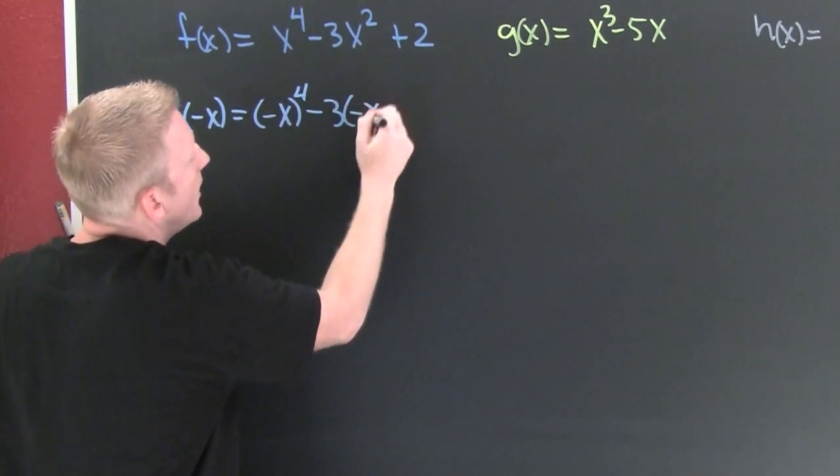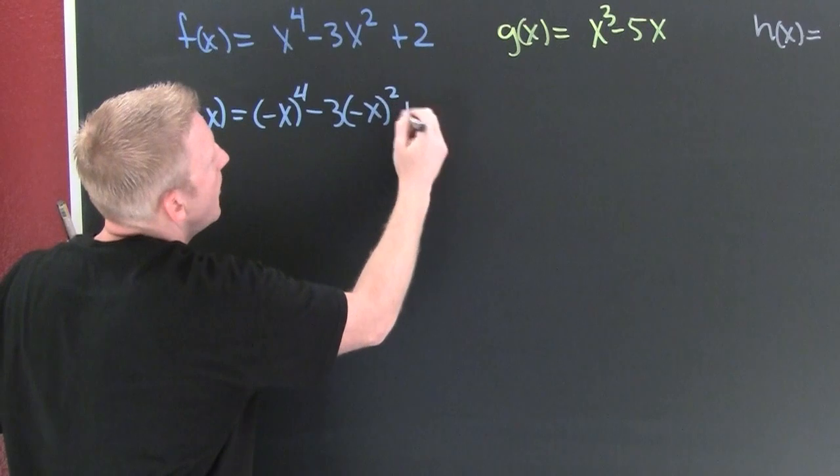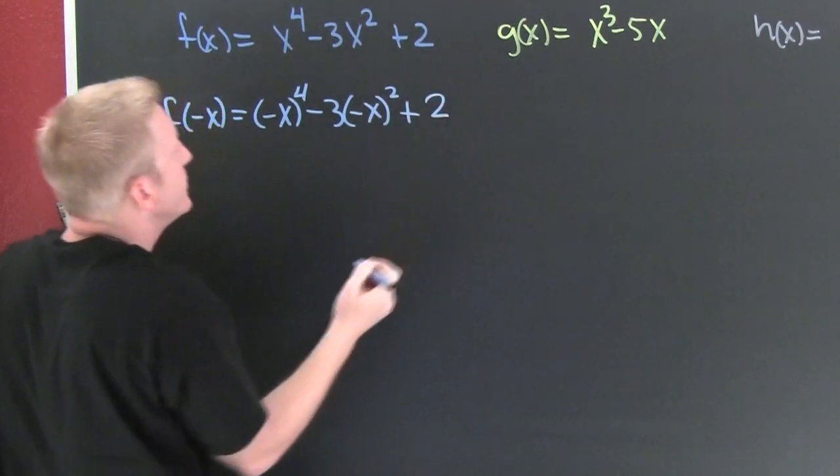Minus three times a minus x squared plus, wait for it, two.